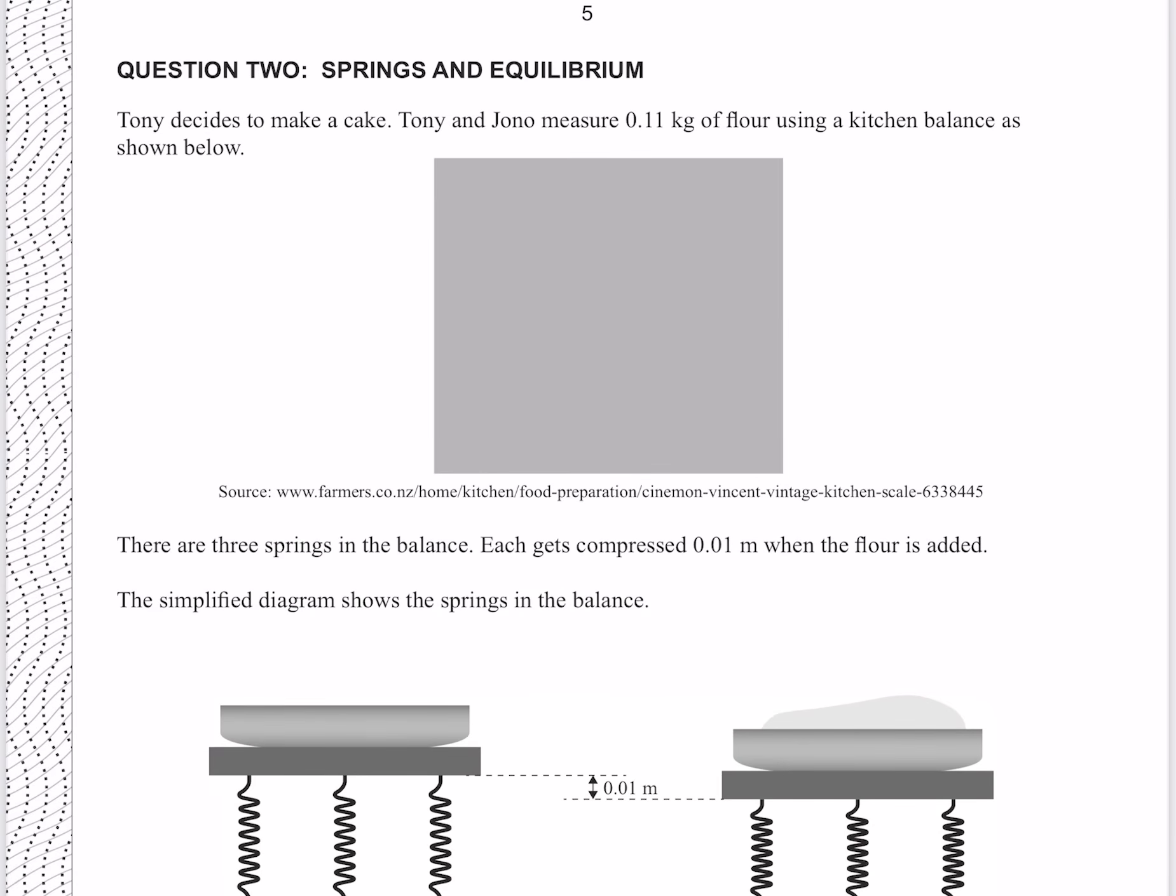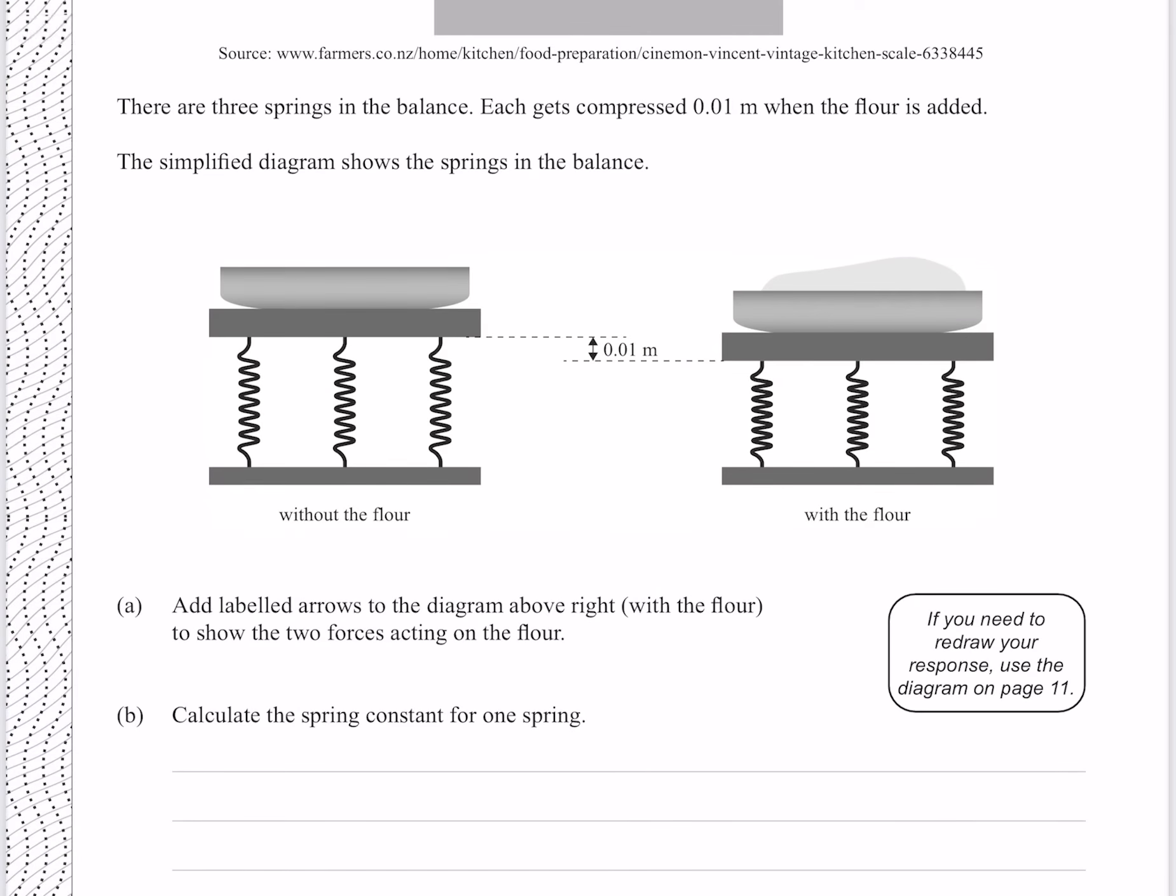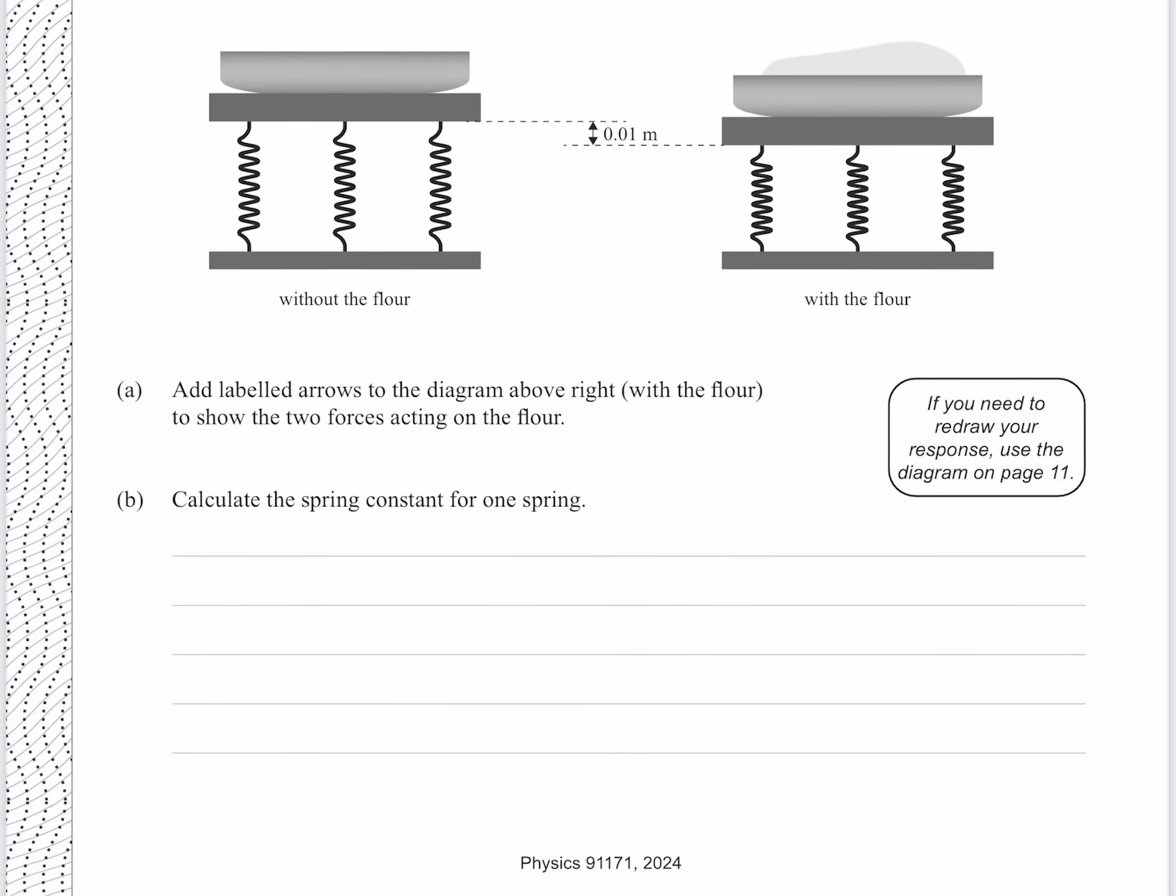Question 2. Tony decides to make a cake. Tony and Jono measure 0.11 kilograms of flour using a kitchen balance as shown below. There are three springs in the balance. Each gets compressed 0.01 meters when the flour is added. The simplified diagram shows the springs in the balance. Add labelled arrows to the diagram above right, with the flour, to show the two forces acting on the flour.